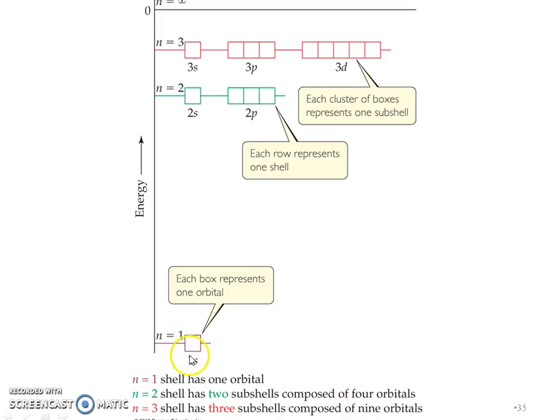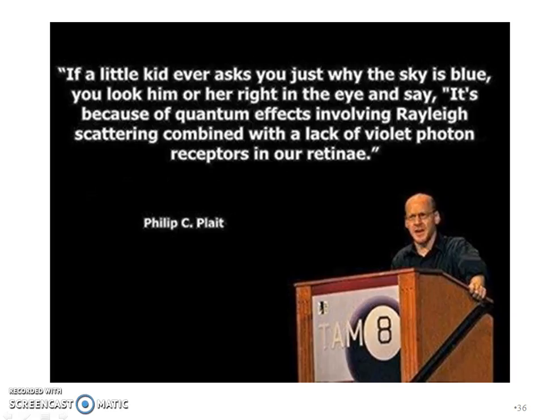We want to understand that in energy level one, there's only one orbital. In energy level two, the S has one orbital, but the P has three. In energy level three, we have three subshells or three shapes available. We have the S which would have two electrons, the P six, and then the D five. Remember that information as well.